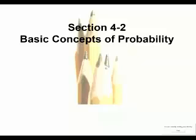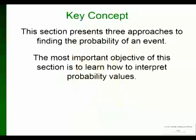Basic concepts of probability. This section presents three approaches to finding the probability of an event. The most important thing in this section is learning how to interpret probability values. What does it mean when the weatherman says there's a 30% chance of rain?